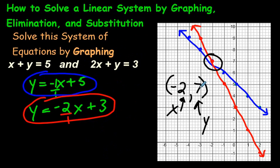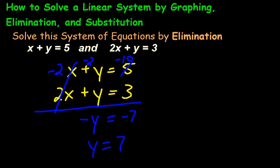The negative 2y and the positive y would be negative y. And negative 10 and 3 would be negative 7. So y would equal to 7. Does that look familiar? Does that 7 look familiar? There it is. See? y was 7 over here when we solved it.